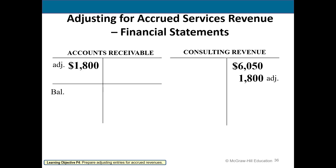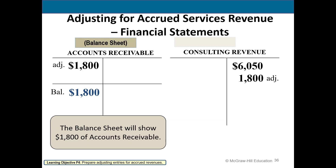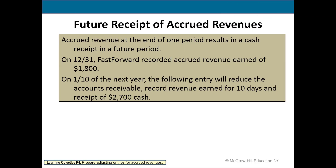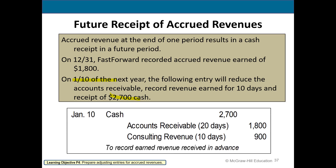The general ledger shows accounts receivable as an asset on the balance sheet and consulting revenue on the income statement. In the next period when they actually receive the full $2,700 on January 10th, the journal entry debits cash for the full amount, reduces accounts receivable from the previous adjusting entry, and increases revenue for the current period.